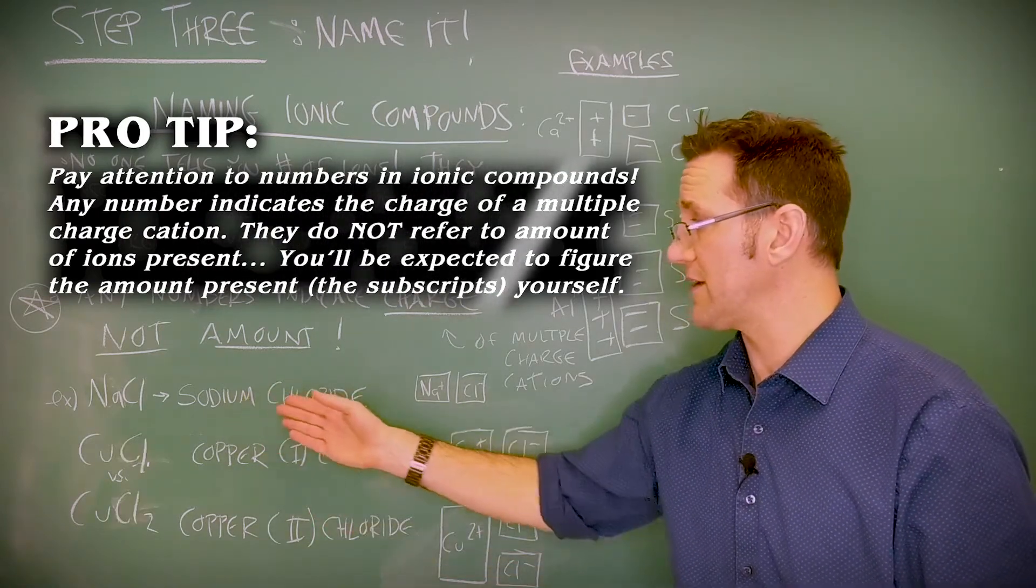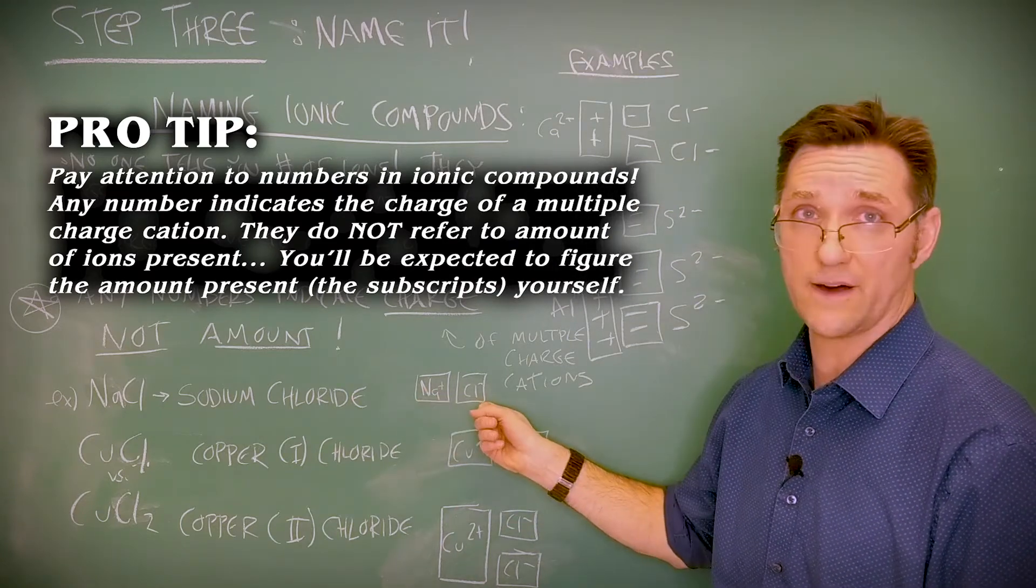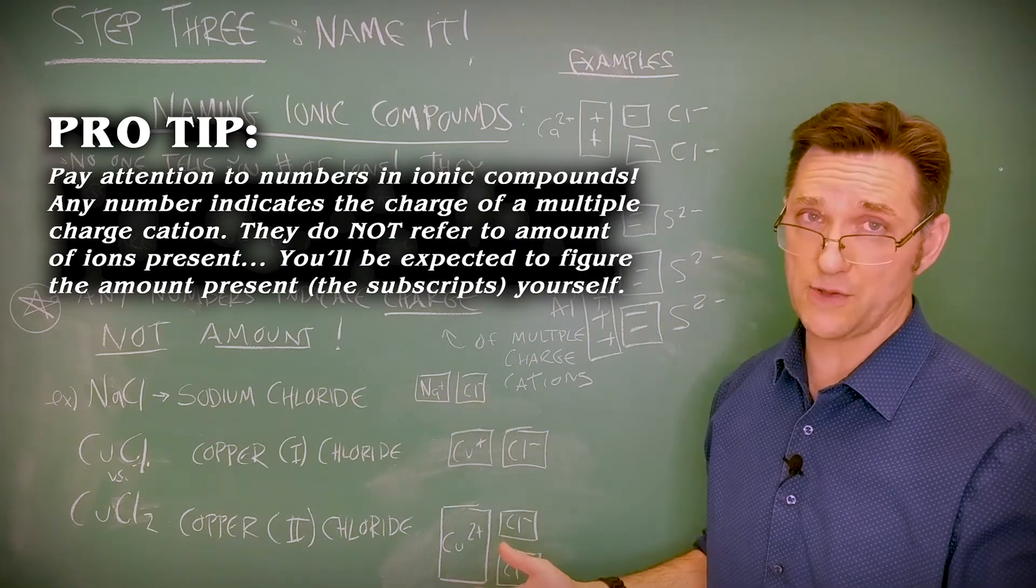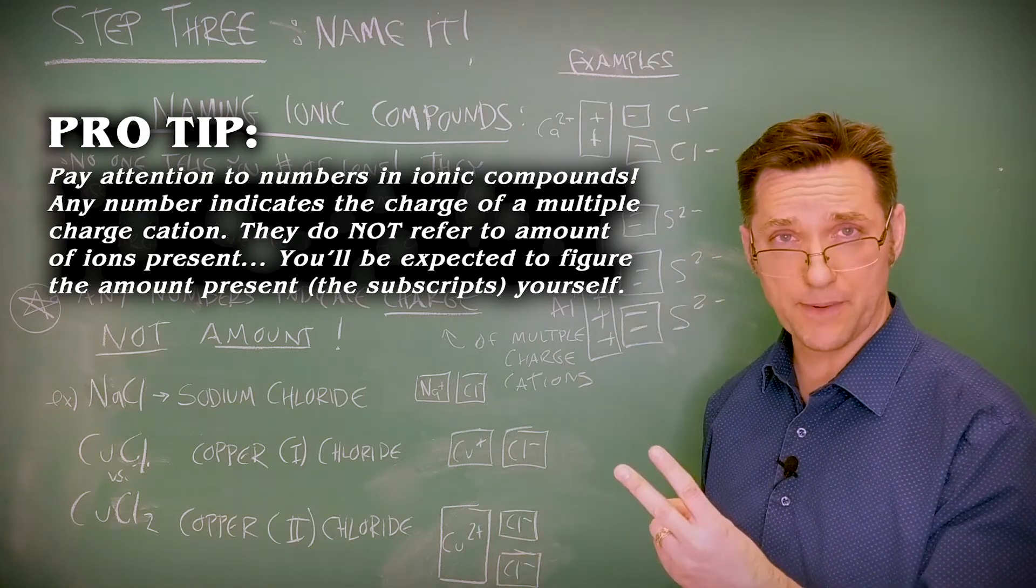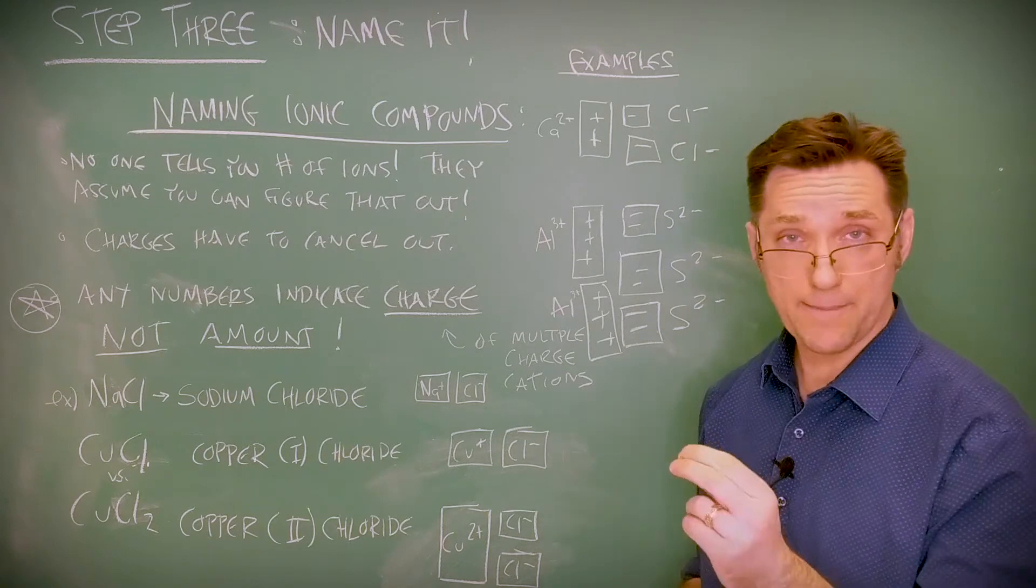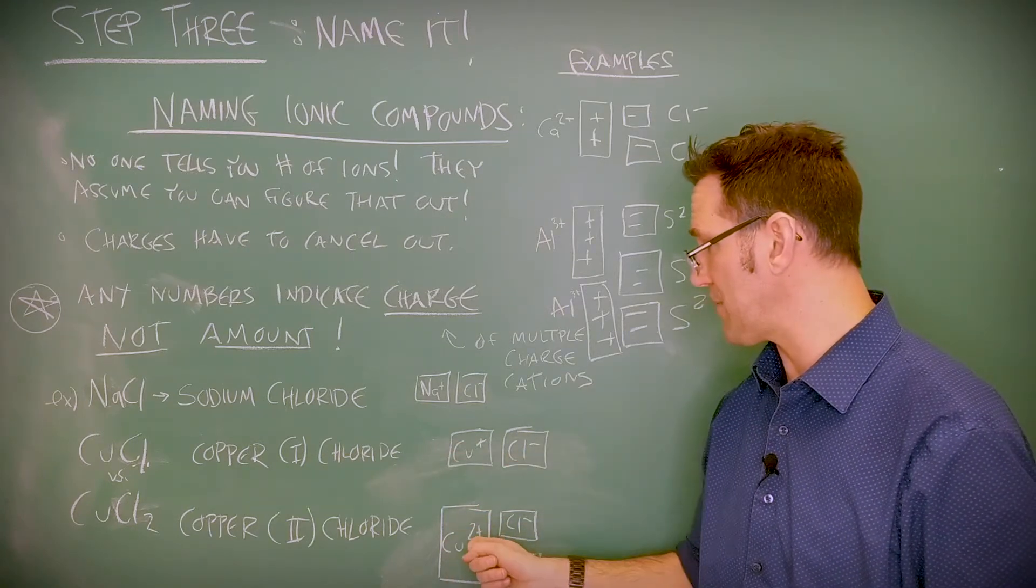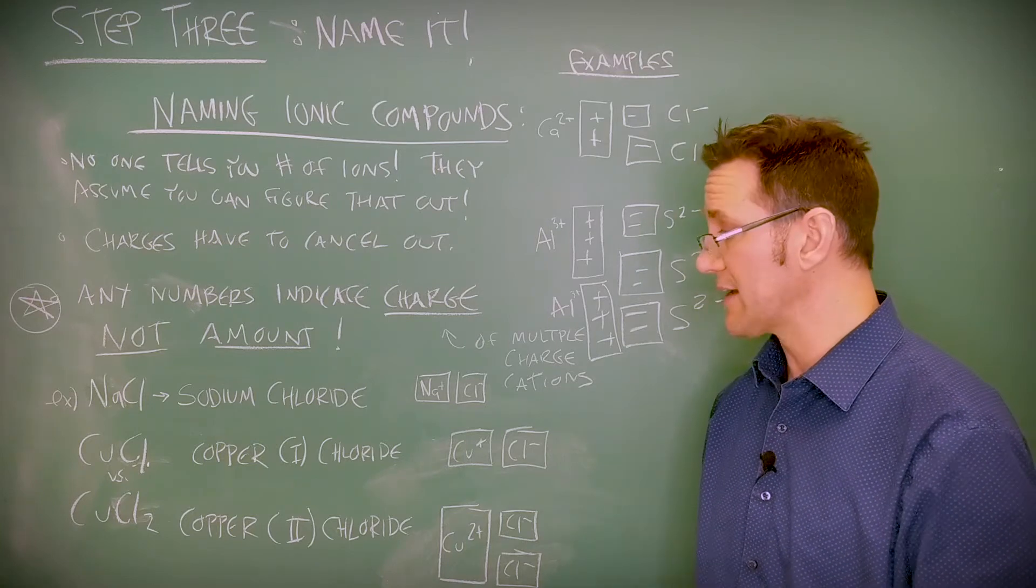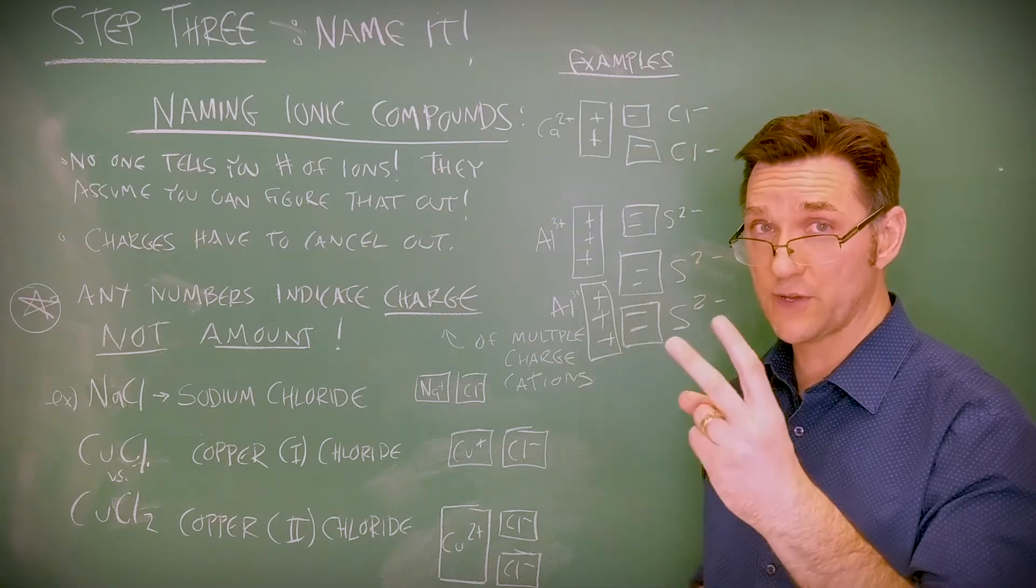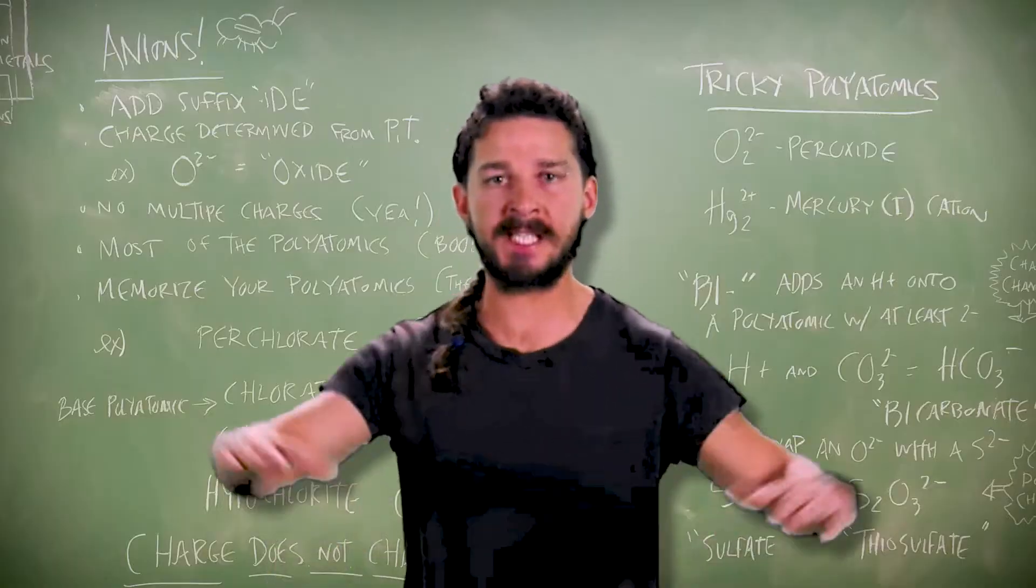Oftentimes, you won't see any numbers at all because there aren't any multiple charge cations. For instance, sodium chloride. That's all you need to figure out that the formula is NaCl. But I can't just say copper chloride. There are two versions of copper, so I have to tell you which one. Copper one, one copper, one chloride. Copper two, one copper two, and two chlorides. Just do it!